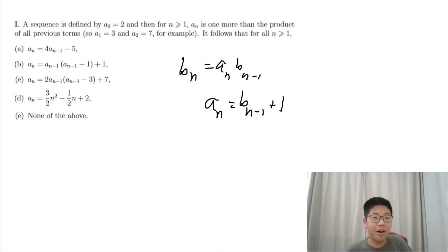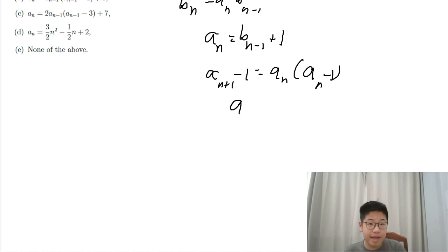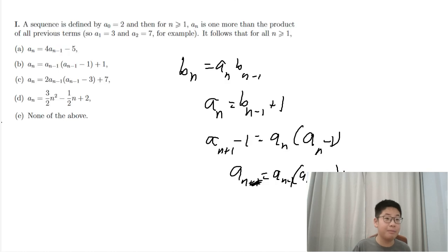Great! So an plus 1, because this is bn, an plus 1 minus 1 equals an times an minus 1. This means an plus 1 equals an times an minus 1 plus 1. And then we shift everything, change the subscript, substitute, then bam, you've got answer b.